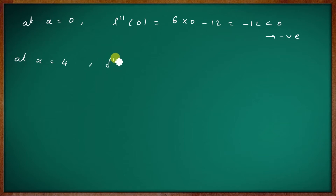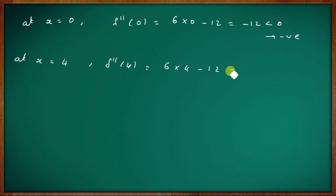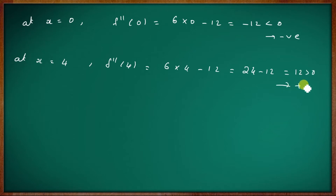Now at x equal to 4, f double dash of 4 equal to 6 times 4 minus 12, that is 24 minus 12 equal to 12. That is positive.